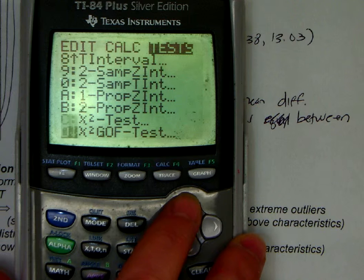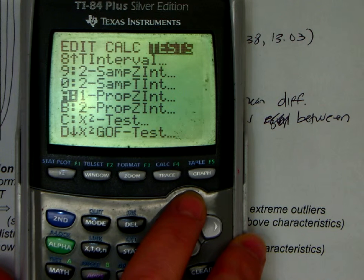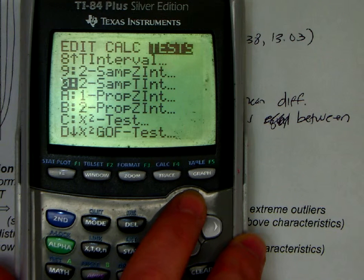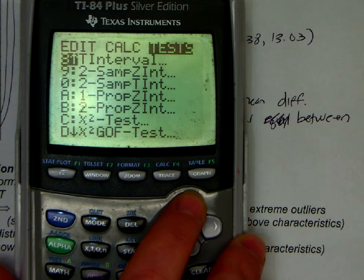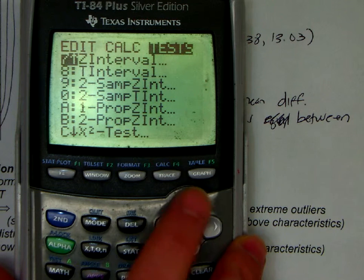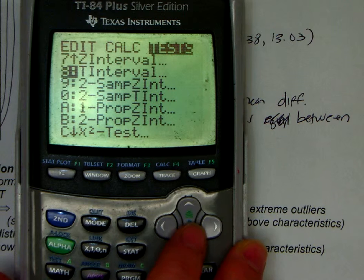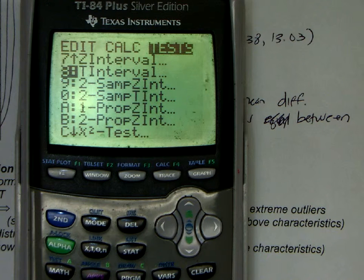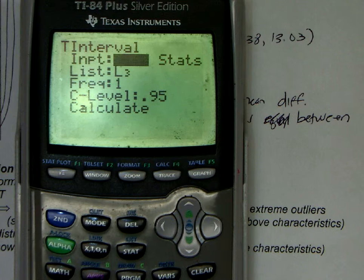Notice if it's a proportion you would use A or B, but it can't be because it's not a proportion, it's a mean. It's not two samples, so now you're between 7 and 8. Is it a T interval or a Z? Sigma's unknown and means are almost always Ts when you don't know that, so we have a T interval.